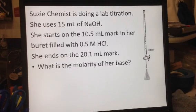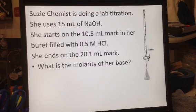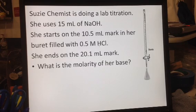First of all, the question is: Susie Chemist is doing a lab titration. She uses 15 milliliters of NaOH, which is 15 milliliters of sodium hydroxide. She starts on the 10.5 milliliter mark in her burette, this is a burette, filled with 0.5 molar hydrochloric acid, that's HCl.